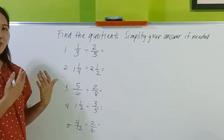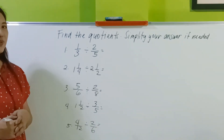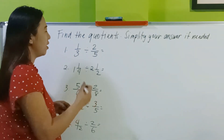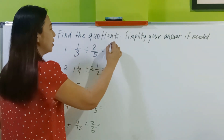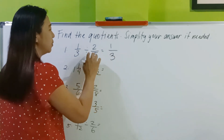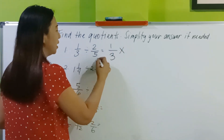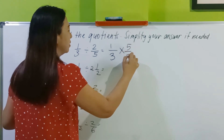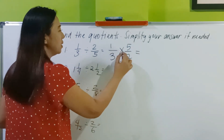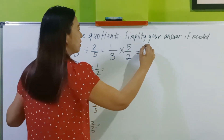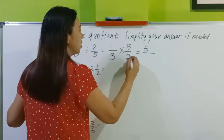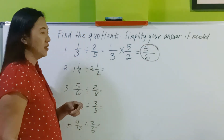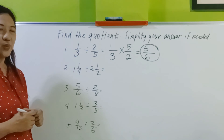Welcome back. Let's now have the answers. Number 1: 1 third divided by 2 fifths — long cut, copy the dividend, change to multiplication, find the reciprocal. 1 times 5 is 5, 2 times 2 is 4 — wait, that's 5 over 4. So the answer for number 1 is 5 sixths.